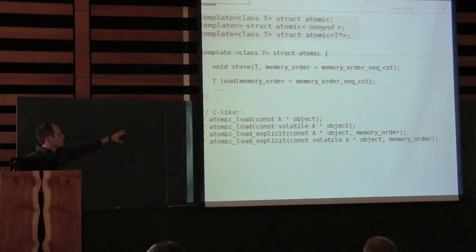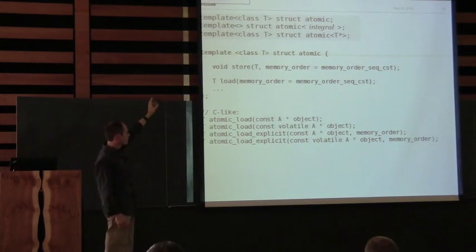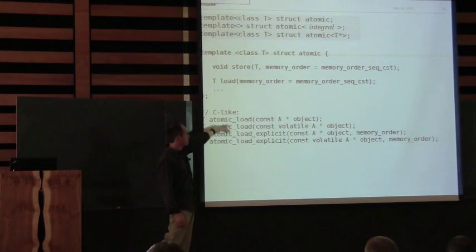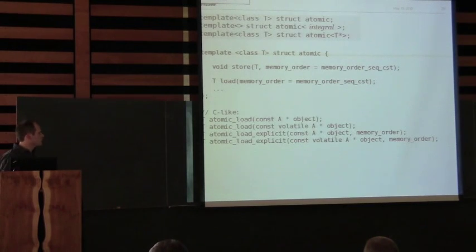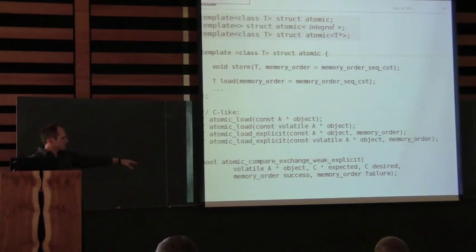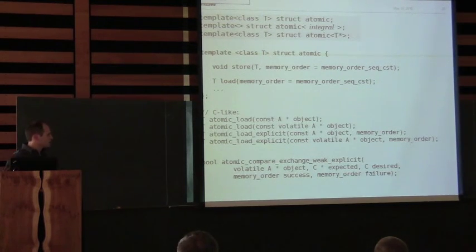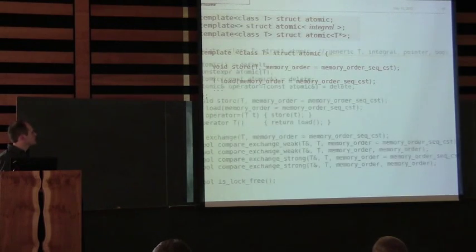Also in the atomic header file, there's the class atomic, but there's also these C-like functions where instead of working on this pointer, you pass in the object. That's the C version, which gets really ugly because you get functions like atomic_compare_exchange_weak_explicit with no function overloading in C and taking like five parameters. Let's not worry about the C version — let's stick to the C++ version.